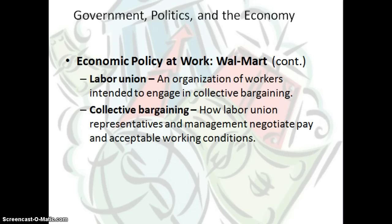In the United States, we allow labor unions to exist. Going back to 1935 when the National Labor Relations Board was created, a labor union is an organization of workers intended to engage in collective bargaining. Labor unions were designed to protect workers from poor working conditions and insufficient pay. The collective bargaining process is how labor union representatives and management negotiate workers' pay and acceptable working conditions — essentially, workers won't return until management agrees to their demands. If this has a huge impact on the economy, the federal government will step in, and with that threat, management and union reps usually work out a deal.